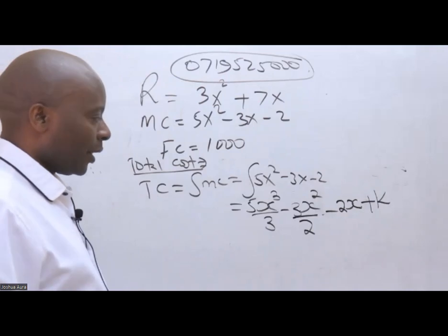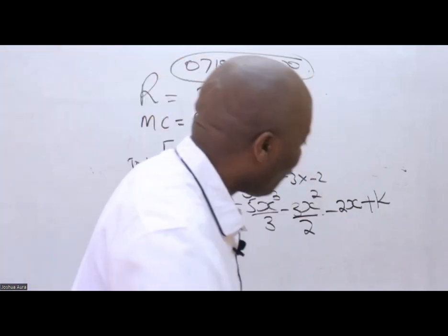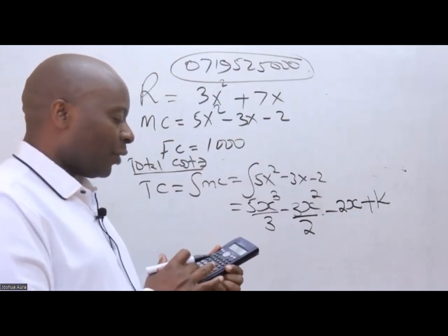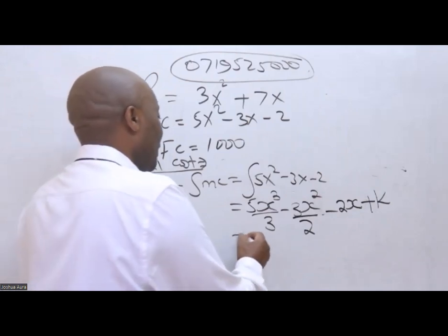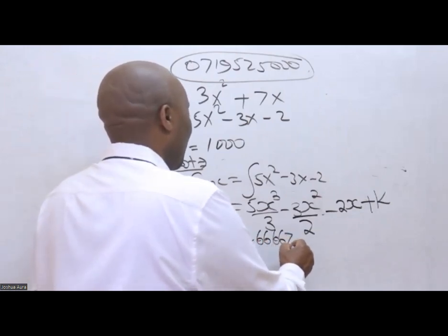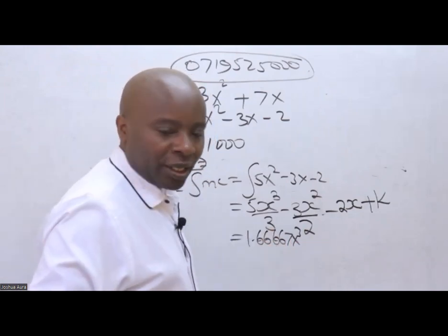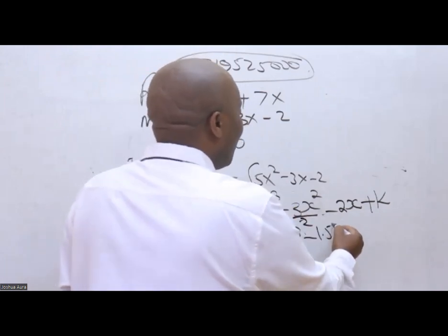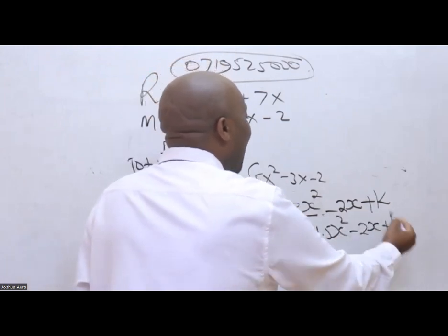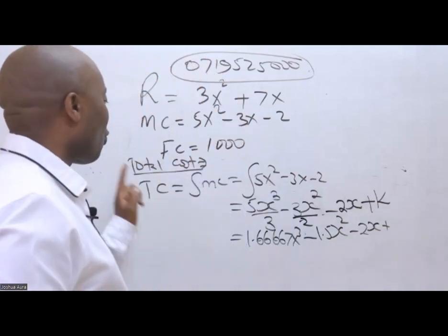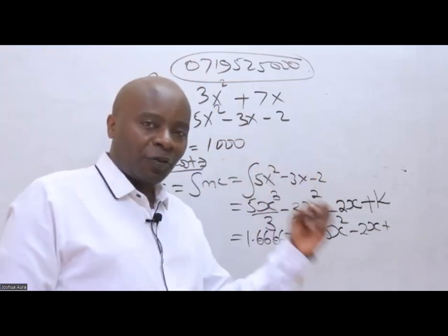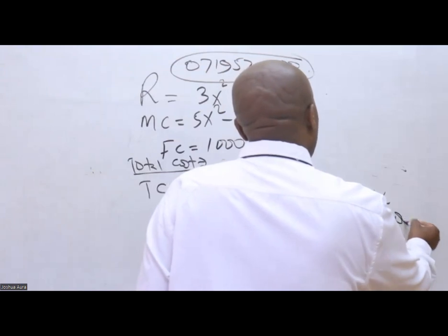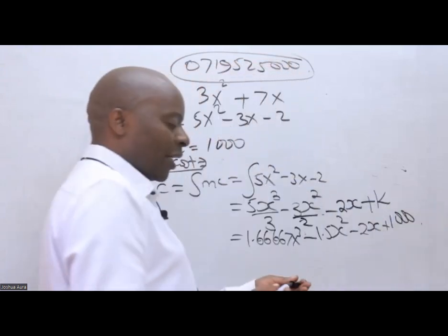So if I start dividing this, 5 divided by 3 gives me 1.66667 x raised to power 3. Minus 3 over 2 is 1.5, so 1.5 x squared minus 2x plus k, which is a fixed cost. Remember, in terms of cost, the constant is the fixed cost. And this constant has been provided. The constant has been provided as a thousand.